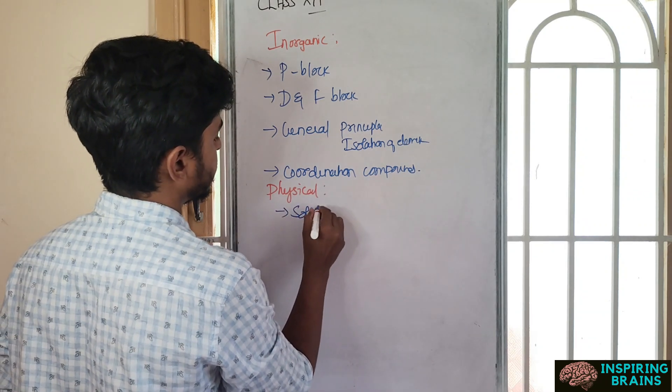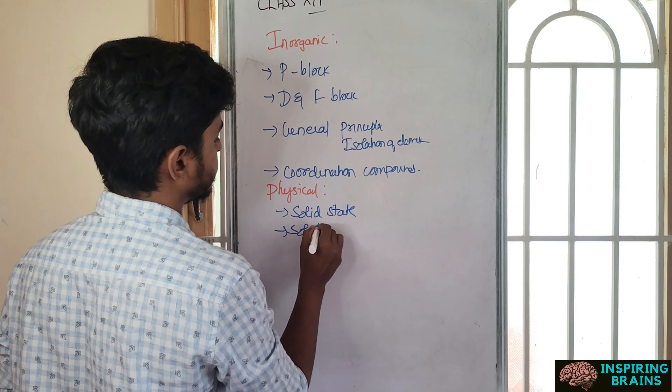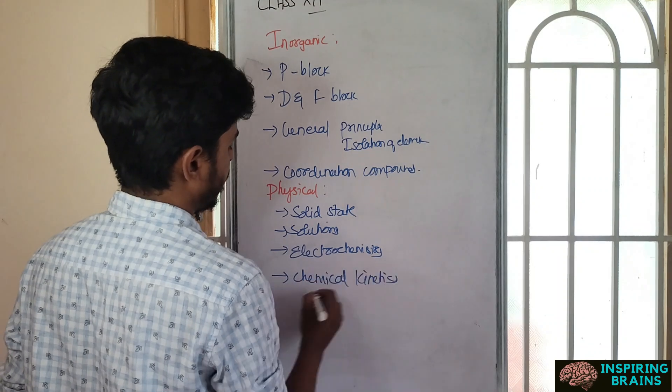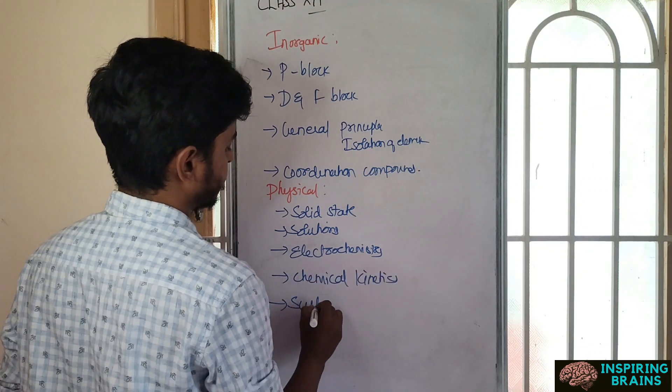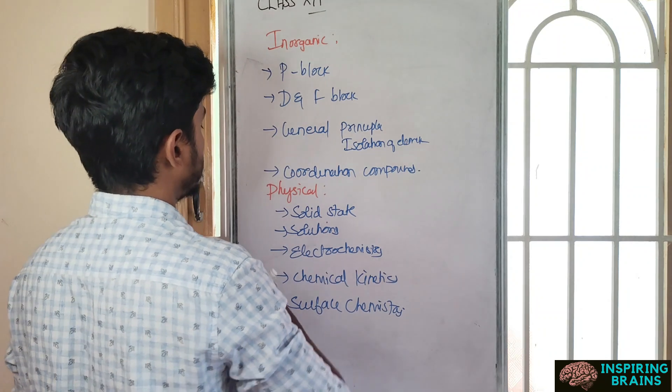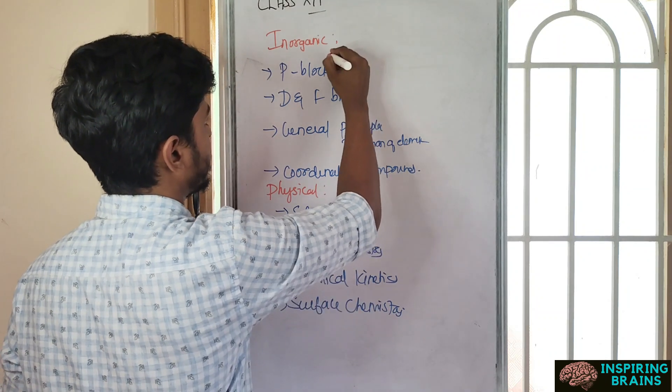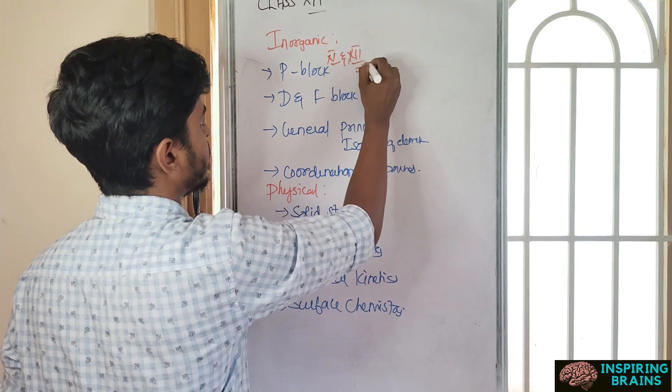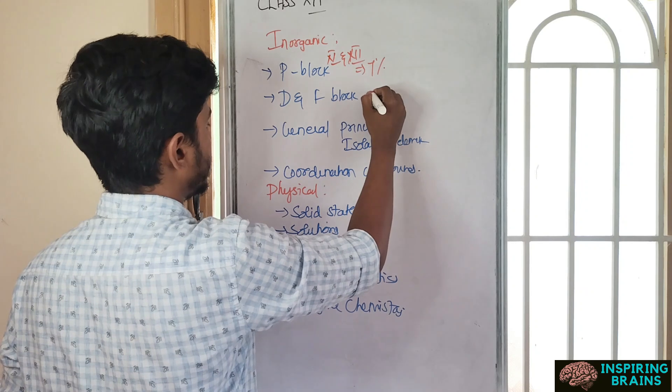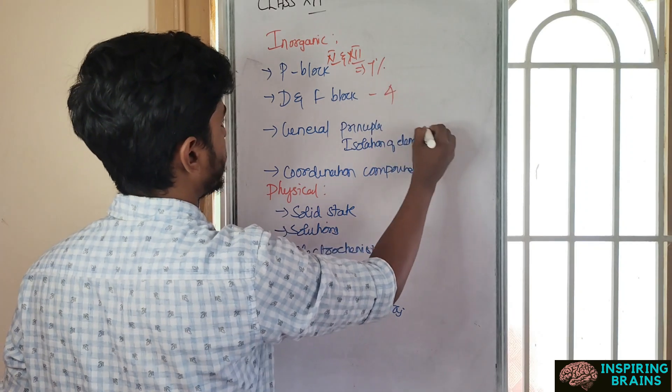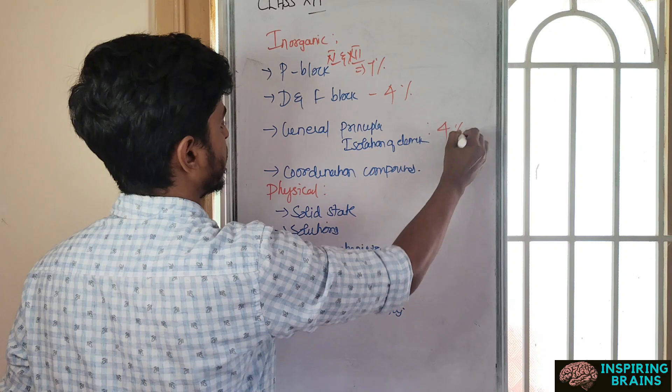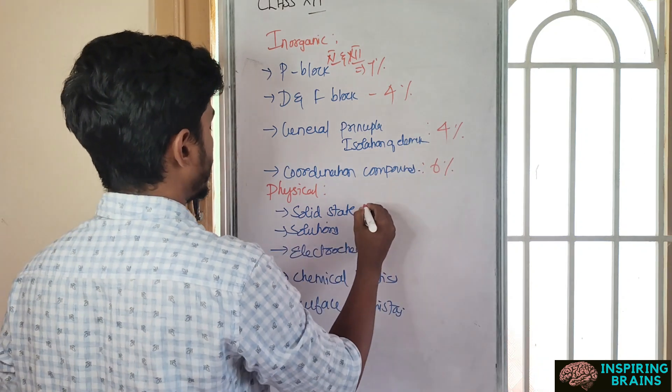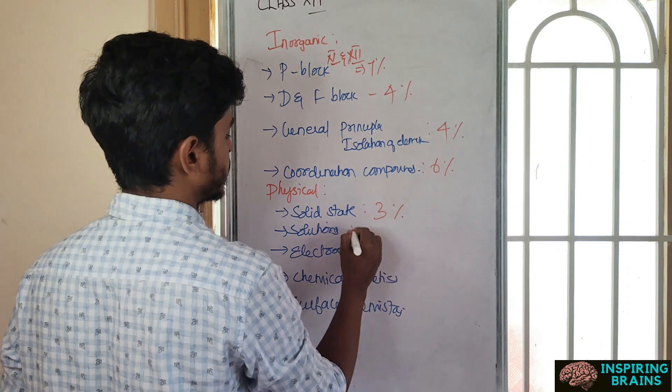Going with physical chemistry, you've got solid state, solutions, electrochemistry, chemical kinetics, and finally surface chemistry. Percentage of allotment: P block 11th and 12th combinedly will form 7 percentage, then D and F is 4 percentage, this is 4 again, and this is 6 percentage.